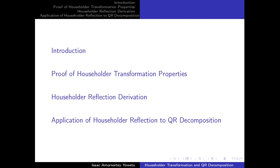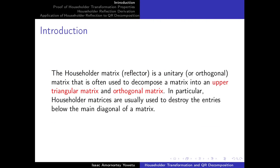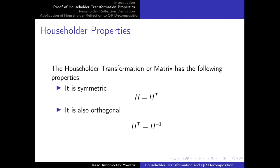We'll also look at some applications of this Householder reflector matrix to QR decomposition. This Householder transformation is known to be a unitary or orthogonal matrix that is used to decompose a matrix into an upper triangular matrix and an orthogonal matrix. In particular, the Householder transformation matrix is usually used to zero out the entries below the main diagonal of the matrix.